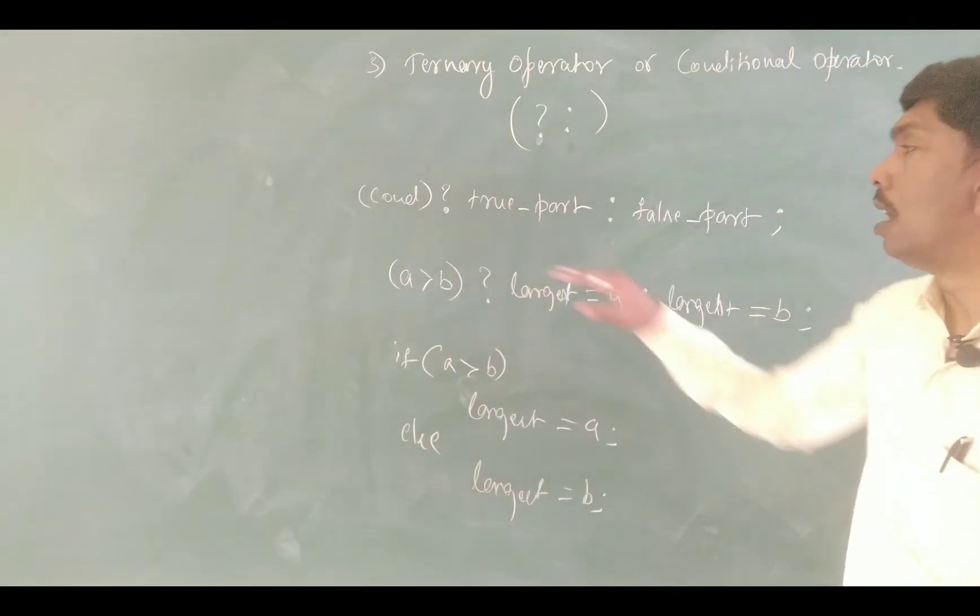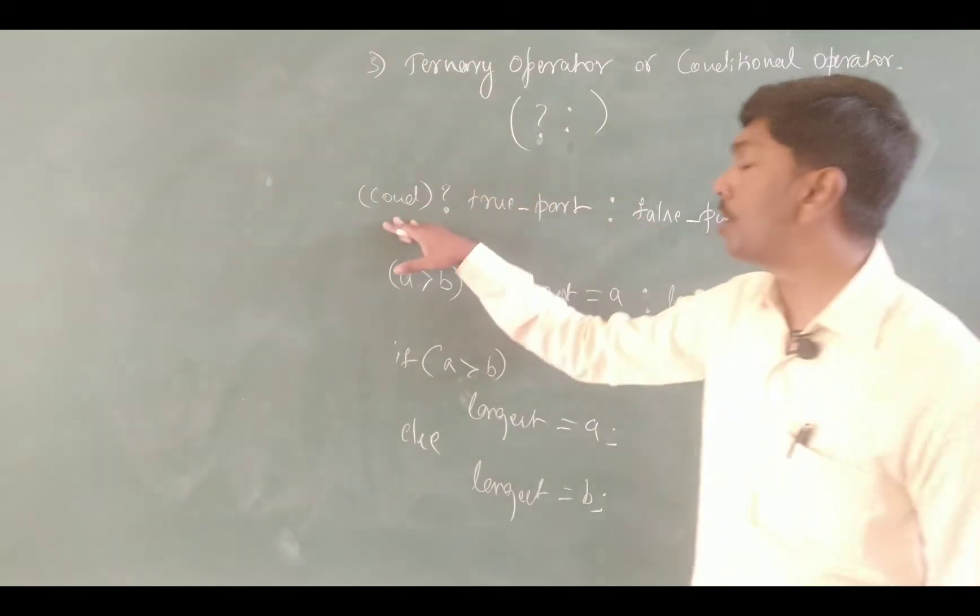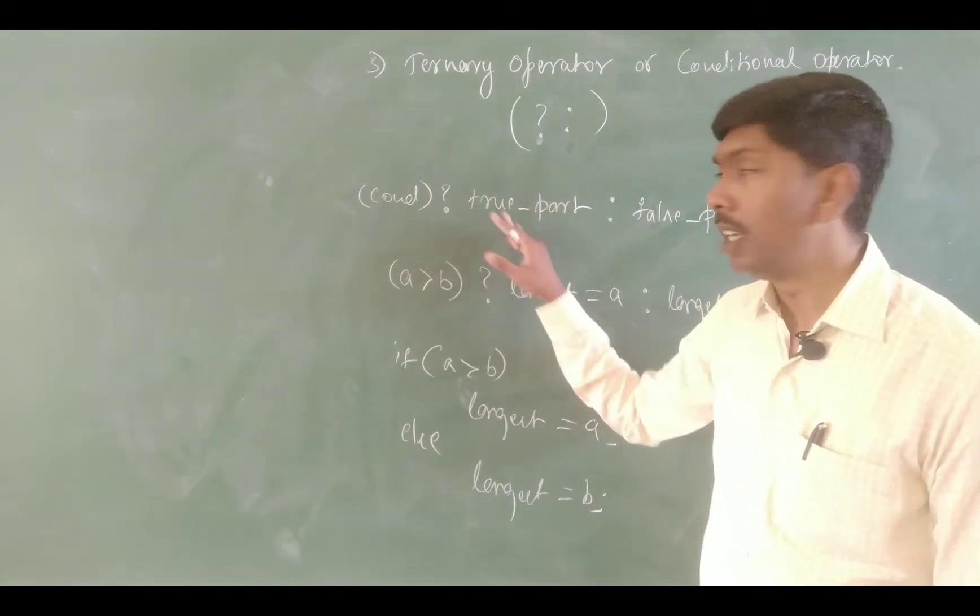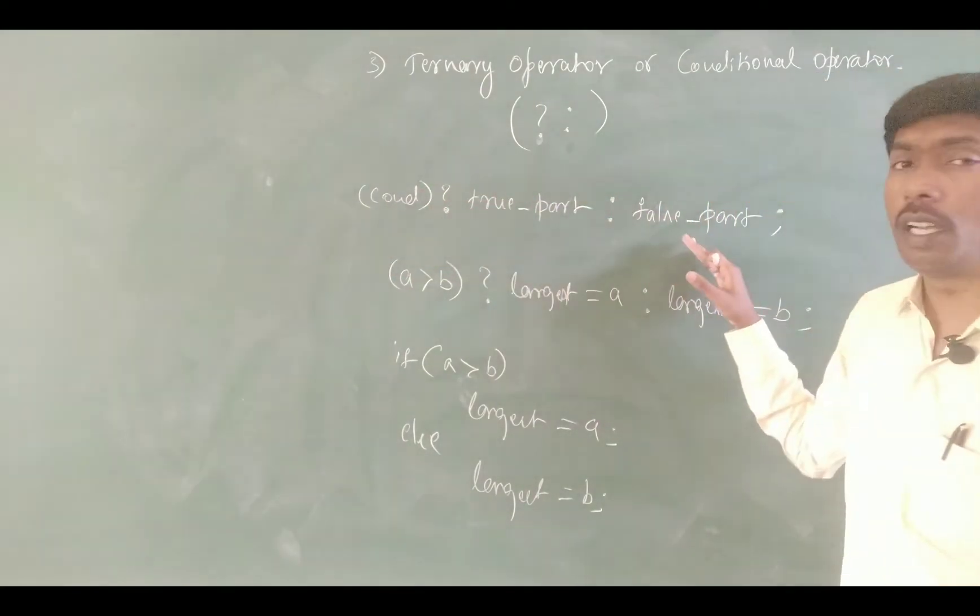One, two, three. Condition part, true part, false part. If the condition is true, then it executes the true part. If the condition is false, then it executes the false part.